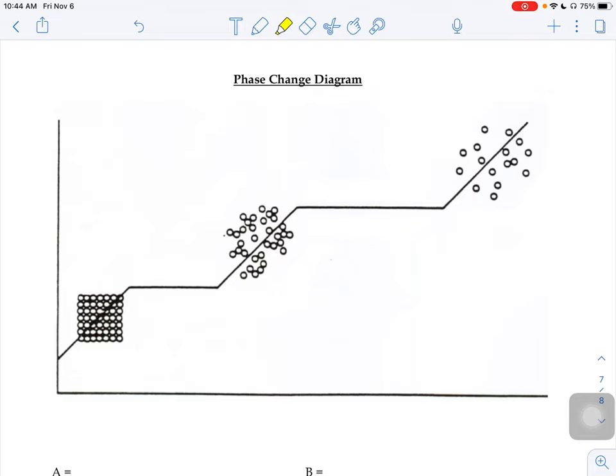So with this phase change diagram, you could probably figure out there, looking at those particles, that particles here, this part of the graph where they're tightly packed together there, that's supposed to represent when the object is in its solid state. When the particles look a little more spread out, this guy, during that whole section, it would be a liquid. And up here, this is when it's a gas.